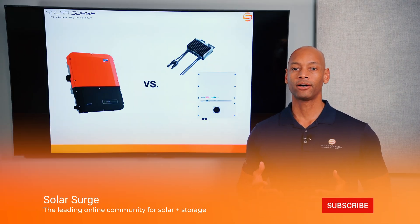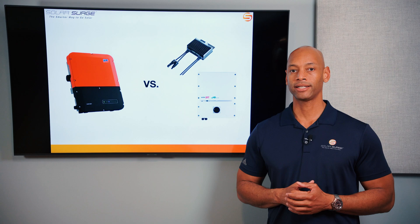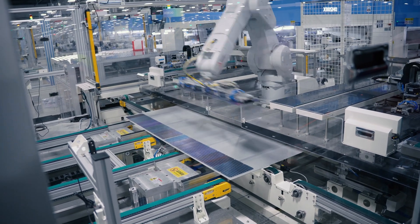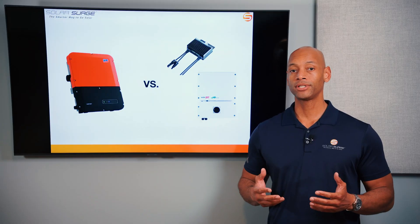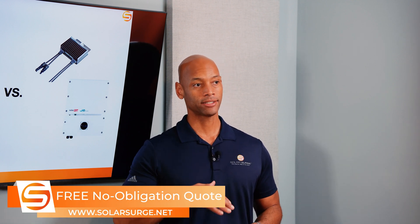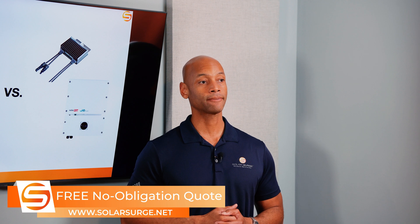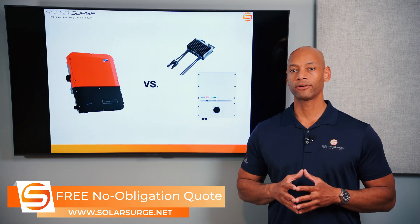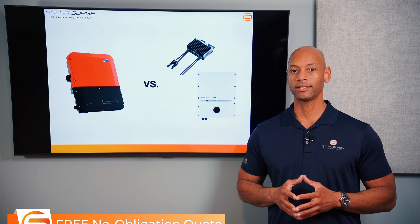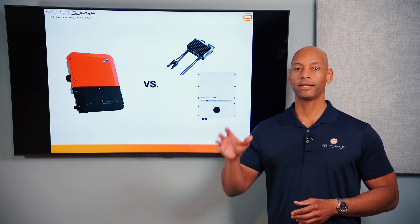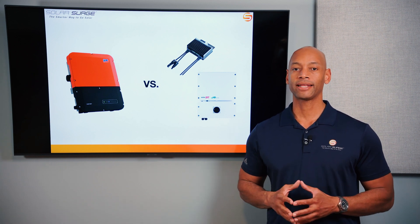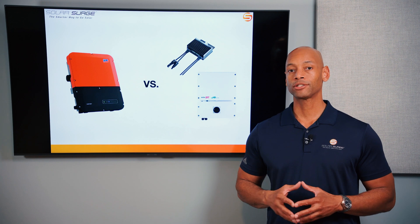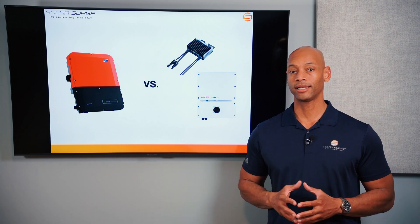Solar panels natively are DC — direct current — electrical devices, meaning that the electricity that comes directly off the solar cells is direct current, constant voltage. On the other hand, our homes and the electric grid are wired for alternating current, where the voltage actually fluctuates in a cycle. Here in the United States, it runs at 60 cycles per second. Alternating current is more efficient for transmission across long distances, so you get less power loss sending electricity from a power plant to a substation and across power lines to your home. That's why AC won out as the electric grid standard.